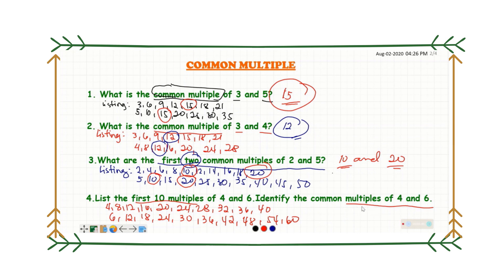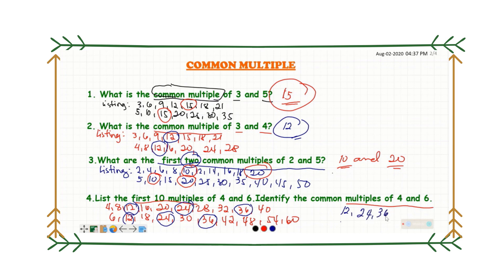Now we need to find the common multiples of four and six. Both have twelve, both have twenty-four, and both have thirty-six. So twelve, twenty-four, and thirty-six are the numbers common to both four and six. These are the first three common multiples of four and six.